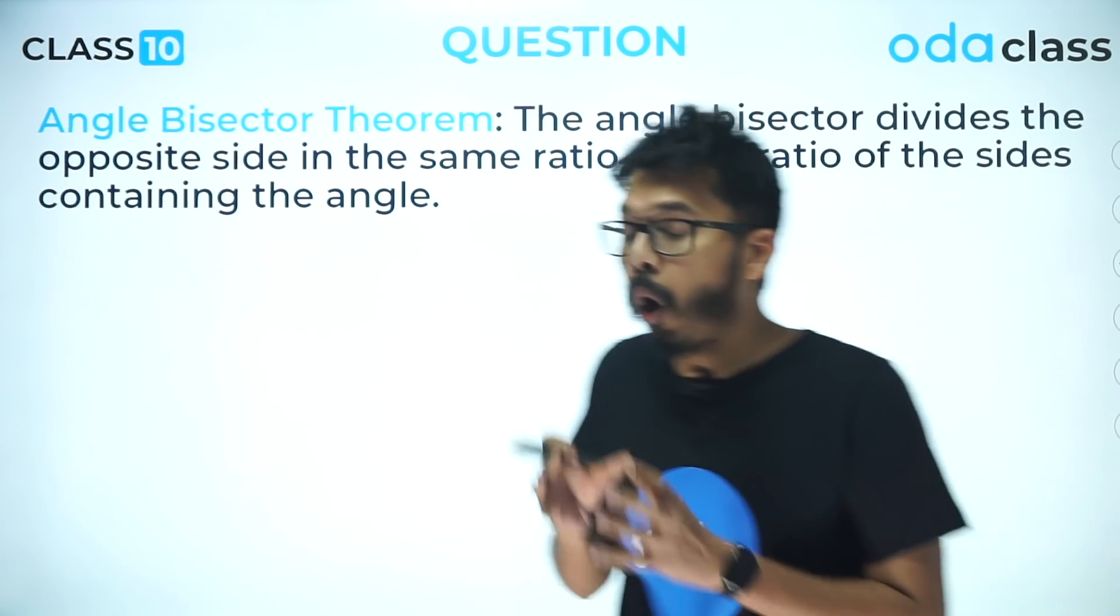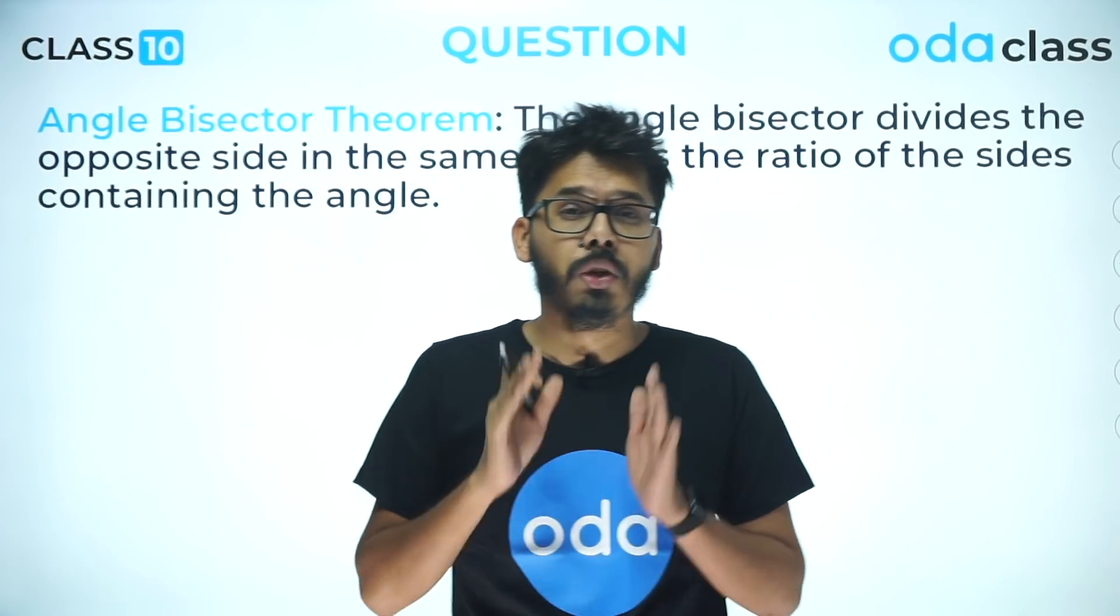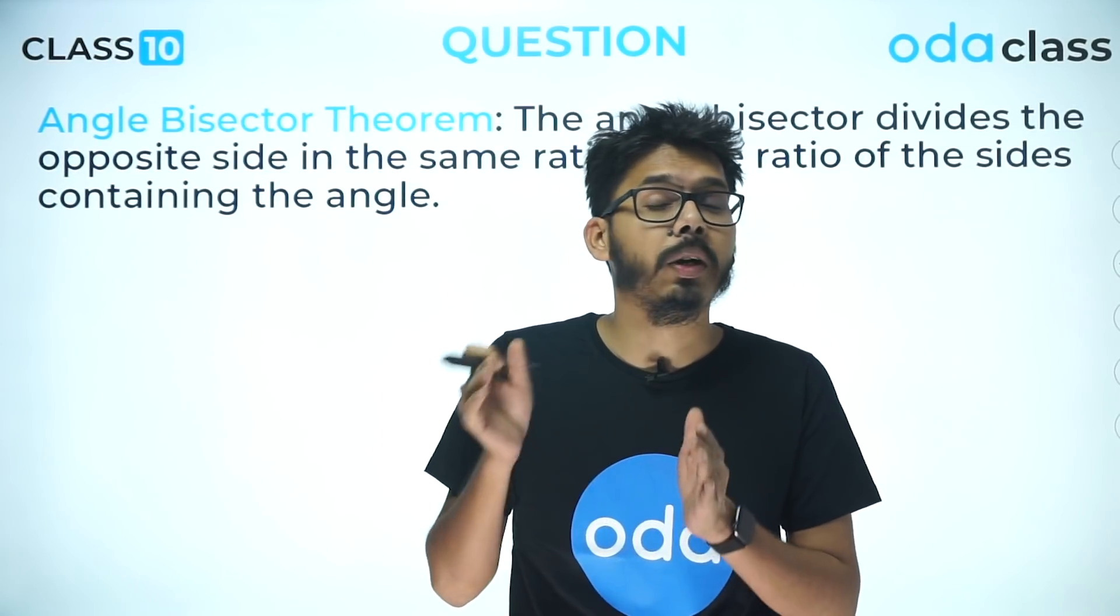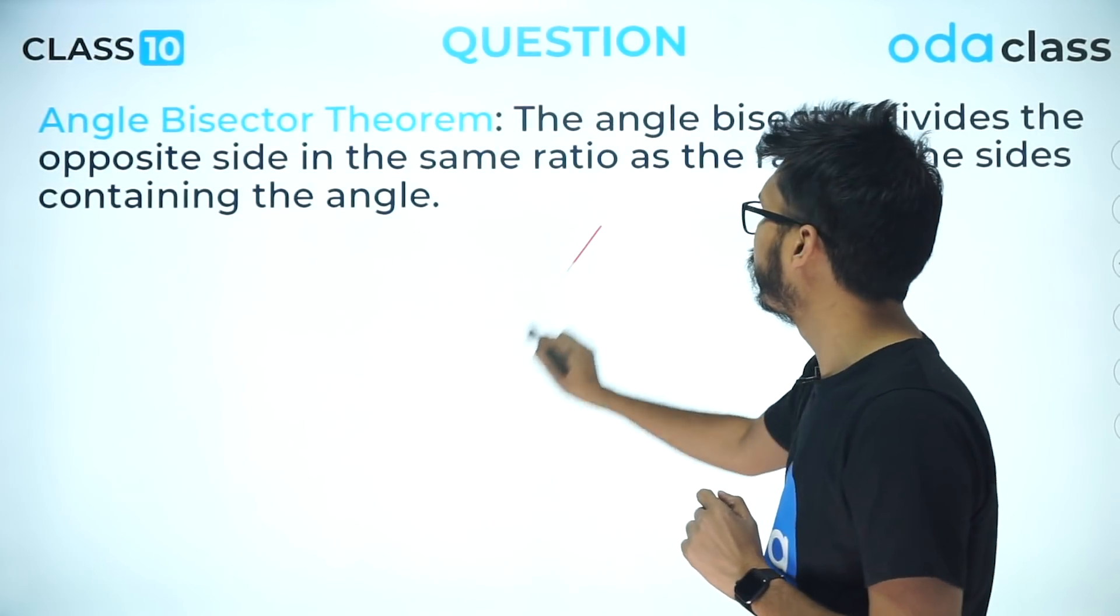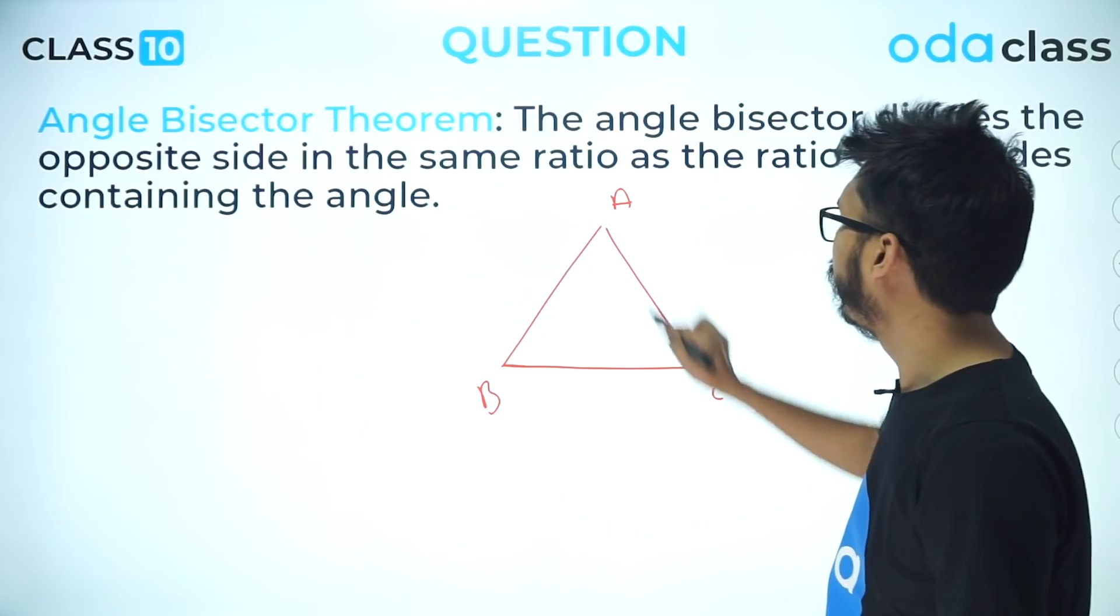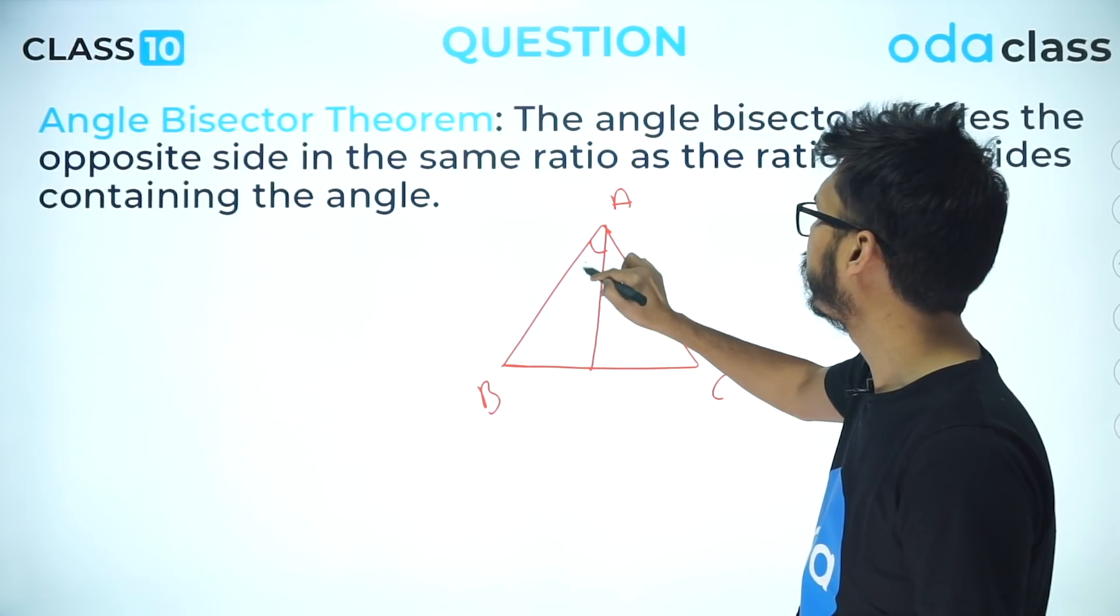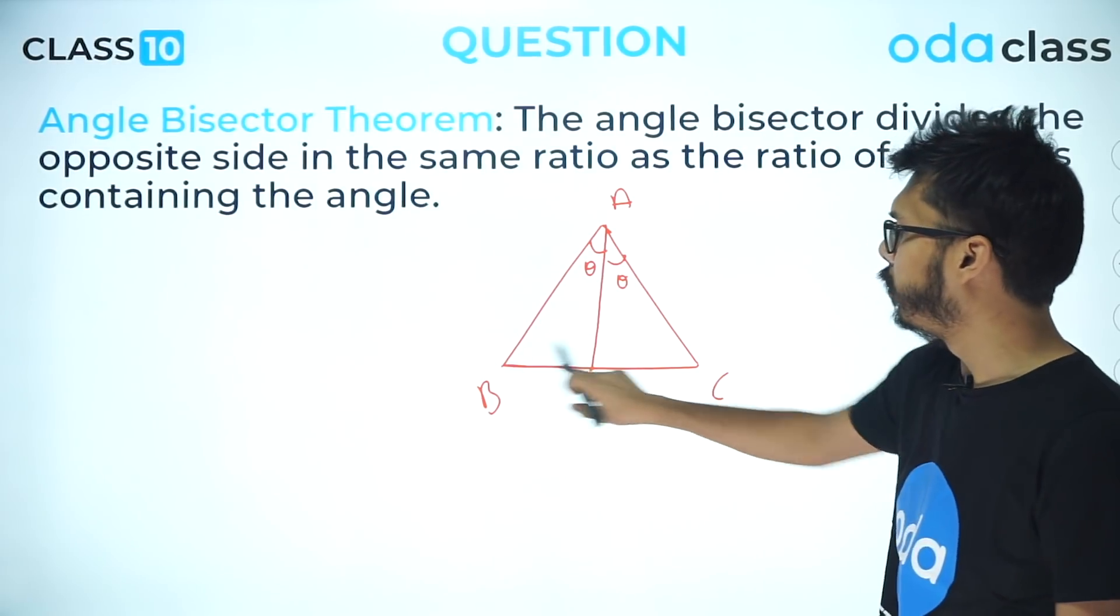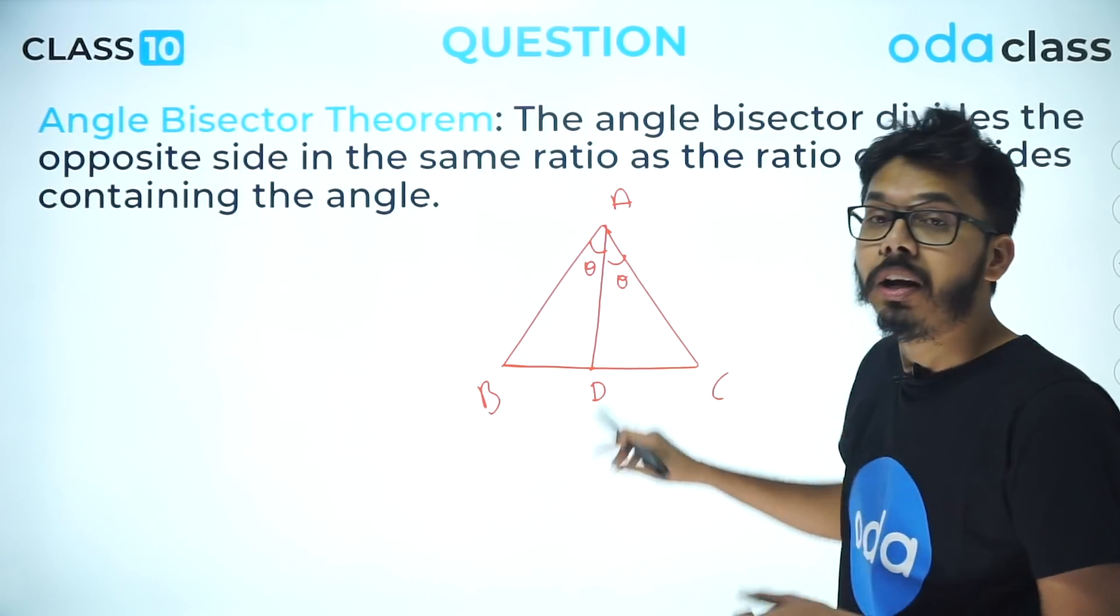The first thing is angle bisector theorem, which is very common and can easily appear in board exams. You guys know angle bisector theorem, but if you miss one or two pieces of information, you'll make mistakes and get your answer wrong. So let me make you revise what angle bisector theorem is. Suppose there is a triangle ABC, and if I talk about the angle bisector of angle A, we get this line dividing the angle into theta and theta. If I name this point as D, we all know that BD by DC will be the same as AB by AC.